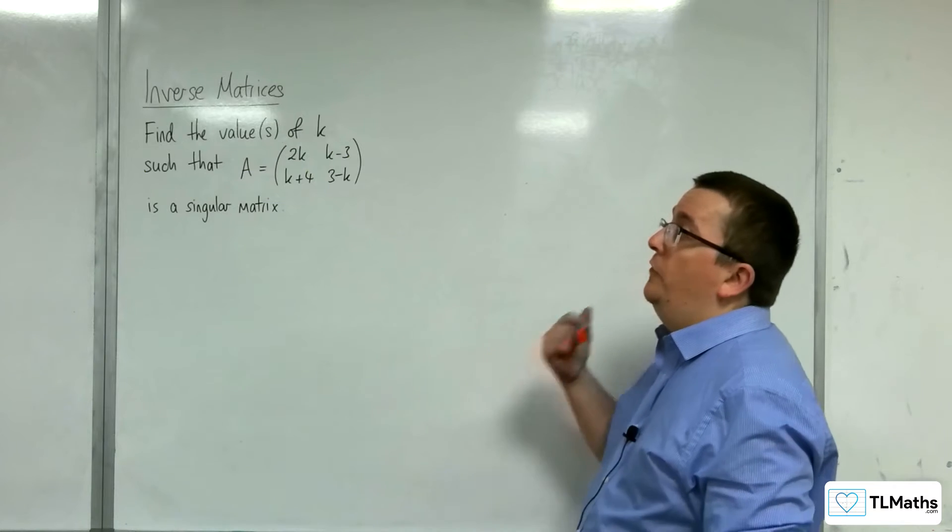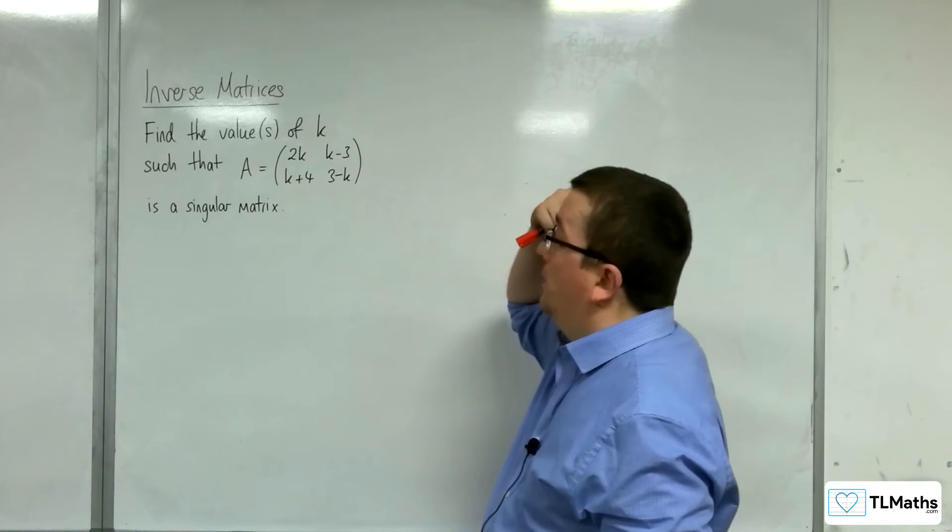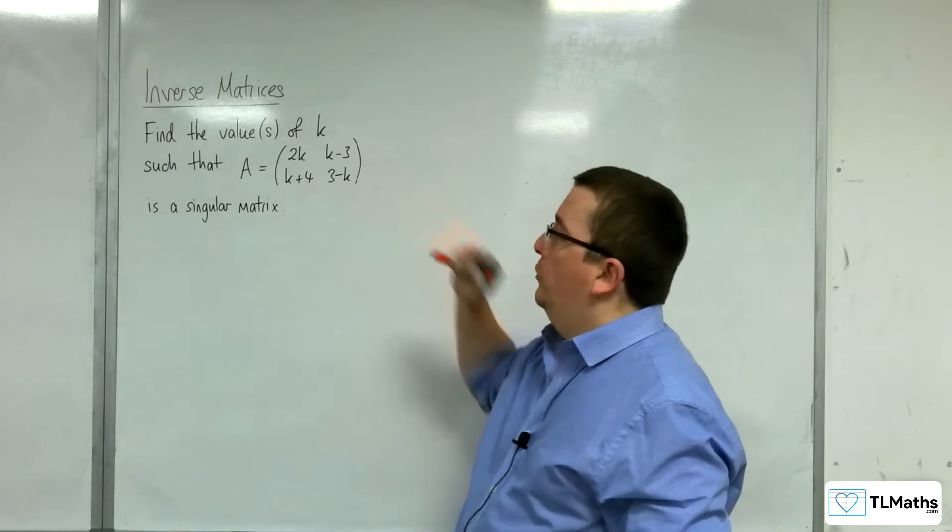In this problem, we need to find the values of k so that A, which is a 2 by 2 matrix, with entries 2k, k minus 3, k plus 4, 3 minus k.